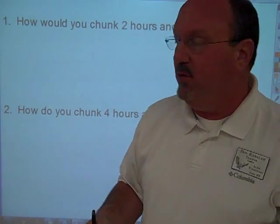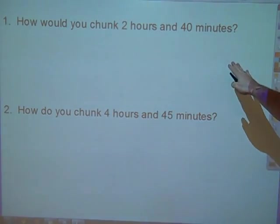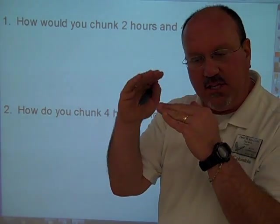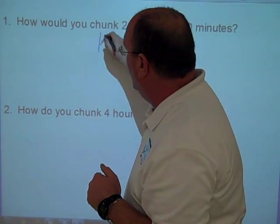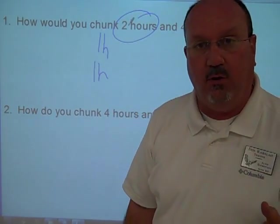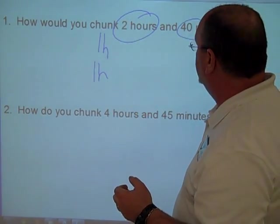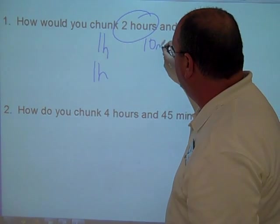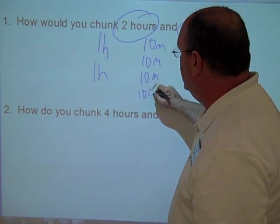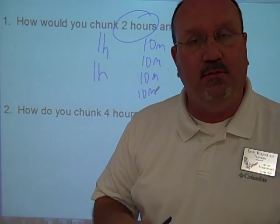One of the first things we do is we say, hey, if we were going to count two hours and forty minutes, how would we chunk that? We teach the kids to chunk it in little time chunks like this. One hour, one hour. That's the two whole hours. And then the forty minutes is ten minutes, ten minutes, ten minutes, and ten minutes. So that's two hours and forty minutes.